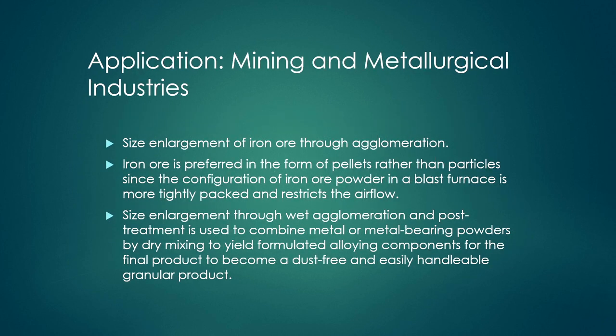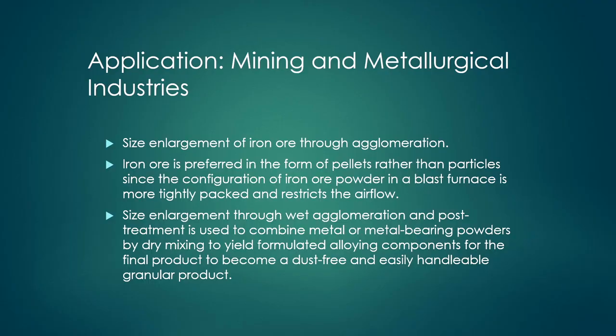In mining and metallurgical industries, enlargement of iron ore through agglomeration is sometimes required. Iron ore is preferred in the form of pellets rather than particles, since iron ore powder in a blast furnace is more tightly packed and restricts air flow. Size enlargement through wet agglomeration is used to combine metal-bearing powders by dry mixing to yield formulated alloying components, resulting in dust-free and easily handleable granular products in the steel industry.